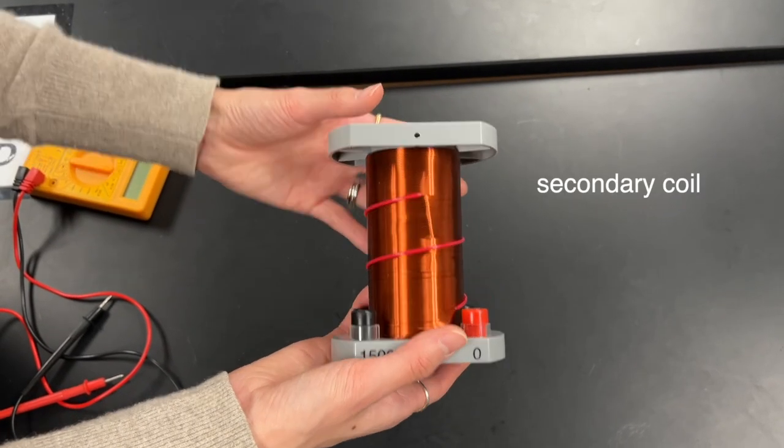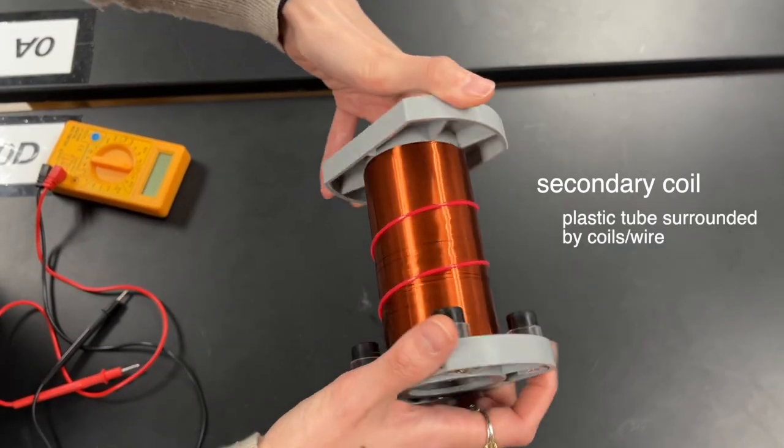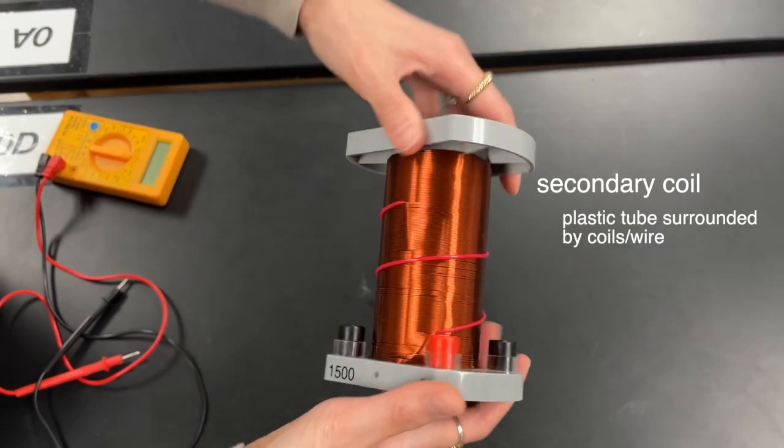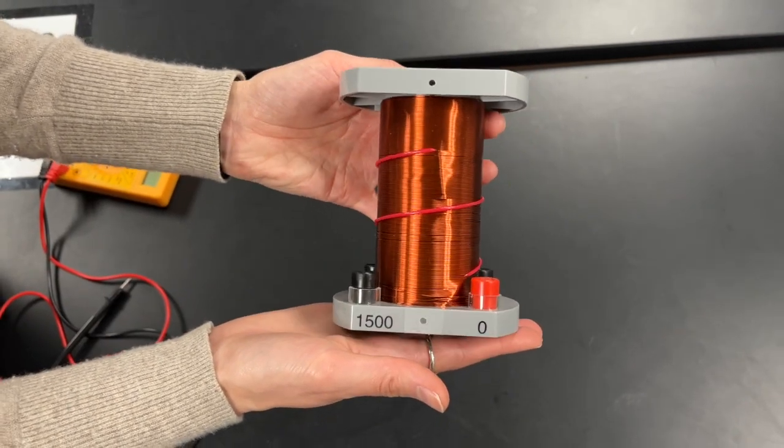This is a secondary coil - literally it's just a plastic tube surrounded by coils or wires. As you can see, it's not plugged into any voltage source at all, so let's see if it can generate current.